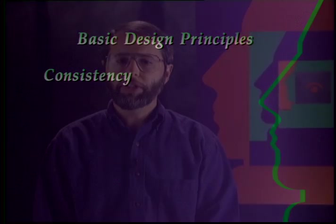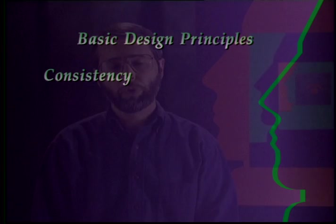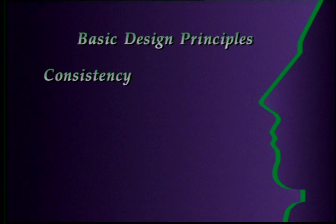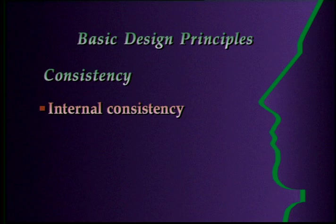Consistency is the next principle. Consistency allows users to transfer their existing knowledge to new tasks and to learn things more quickly, because they need not spend as much time remembering differences in interaction. Consistency provides stability and predictability in the interface. It's important for all aspects, including the names of commands, visual presentation of information, and operational behavior. Consistency within a product means presenting common functions using a common set of commands and interfaces. A copy command should not execute the operation in one situation and require a dialog in another.